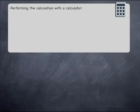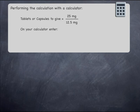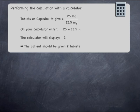To perform the calculation with a calculator, you simply need to enter 25 divided by 12.5 and then press equals. The calculator will display an answer of 2, meaning that two tablets should be administered. This is in line with the earlier estimation of between one and three tablets.